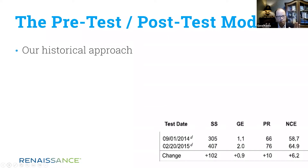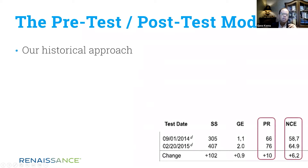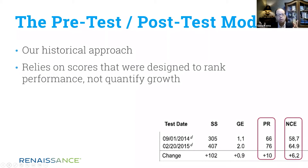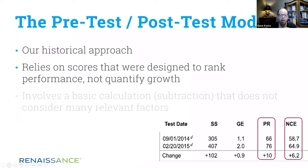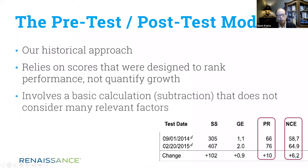There are a couple of problems with using this model. One is that in using this model, you are relying upon scores — for example, percentile ranks and normal curve equivalents — that are designed to rank performance, not designed expressly to quantify growth. And perhaps even more importantly, the basic calculation involved, which is simple subtraction, does not account for many other relevant factors that should be considered when you're trying to say something definitive about how a student has grown.